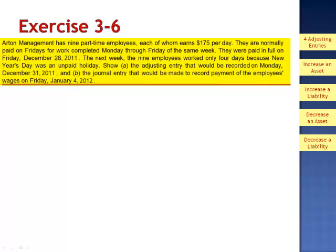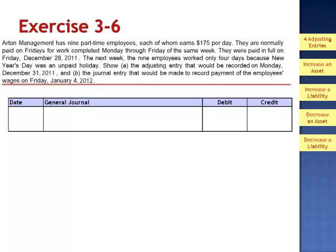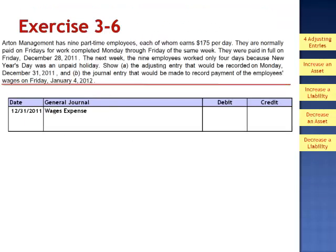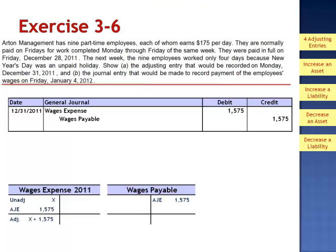And the journal entry that would be made to record payment of the employees' wages on Friday, January 4th, 2012. On December 31st, we need to accrue the payable, increasing the liability by debiting an expense and crediting a payable. The journal entry is a debit to wages expense for $1,575 — nine employees multiplied by $175 per day — and a credit to wages payable for $1,575. This journal entry increases the amount of wages expense in 2011 by $1,575 and creates the balance in wages payable for our balance sheet.